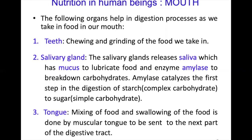Mixing and swallowing of food is done by the muscular tongue, sending it to the next part of the digestive tract. The food that is swallowed is now called a bolus, and the next part of the digestive tract it enters is the pharynx.